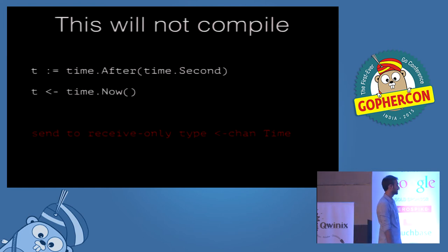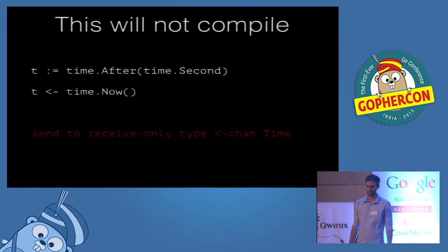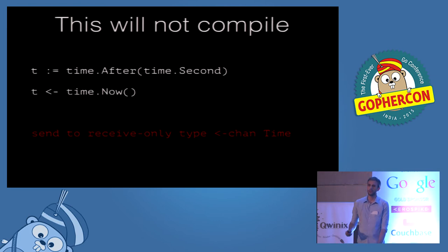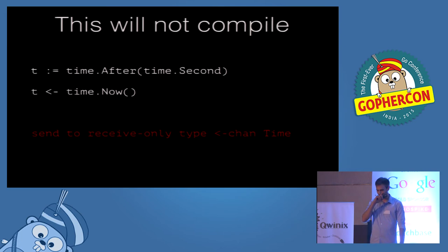If you try to send on a receive-only channel, the compiler will fail you. This will not compile. It's a really good thing because it means your API is not going to be misused.